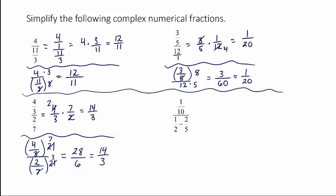In this last example, (1/10) ÷ (1/2 − 2/5), to multiply by the reciprocal of the denominator, that denominator has to be a single fraction first, so you'd have to find a common denominator and subtract before you can multiply by the reciprocal. That's more work. This is exactly when finding the LCM of all the denominators and multiplying is easier. Looking at all the little denominators — 10, 2, and 5 — the least common multiple is 10. So I'm going to multiply the big numerator and big denominator each by 10.